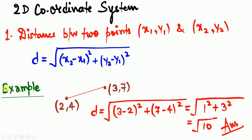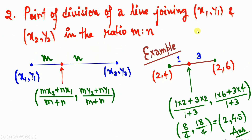Let's see an example. The first point is (2, 4) and the second point is (3, 7). The distance d equals the square root of (3 minus 2) squared plus (7 minus 4) squared. Substituting the values, you get d equals the square root of 10.